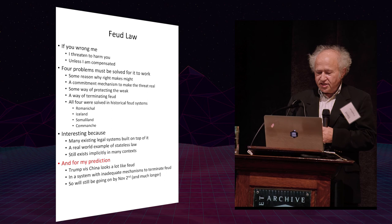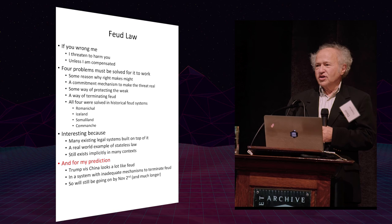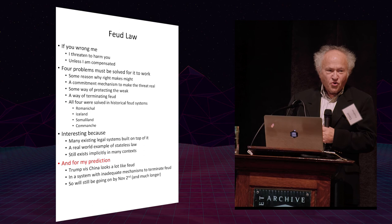Finally, it still exists implicitly in many contexts. An earlier speaker said we needed a science of norms. Part of the way in which norms are enforced is by an implicit feud system, where if you violate the norms, I then treat you badly.